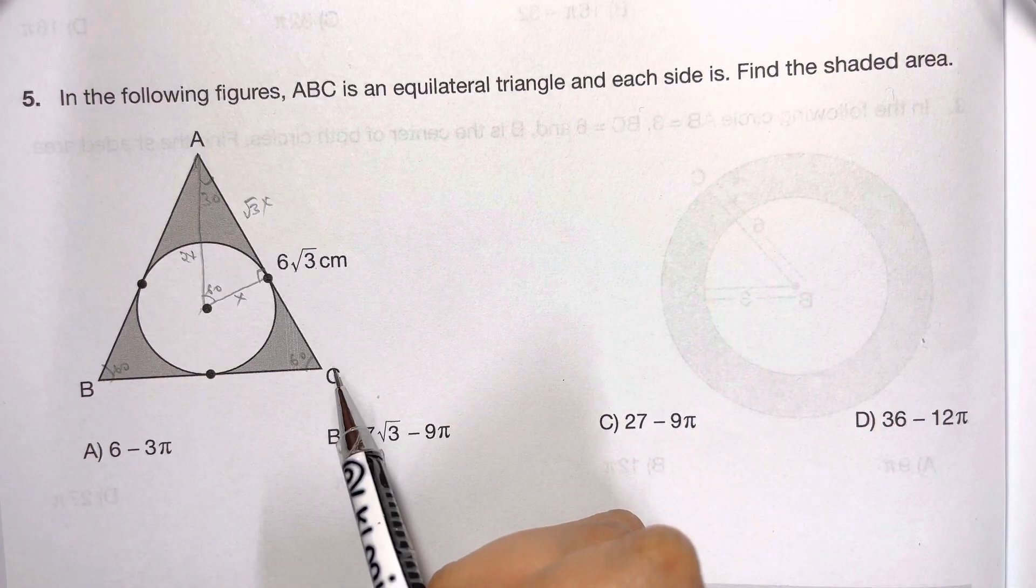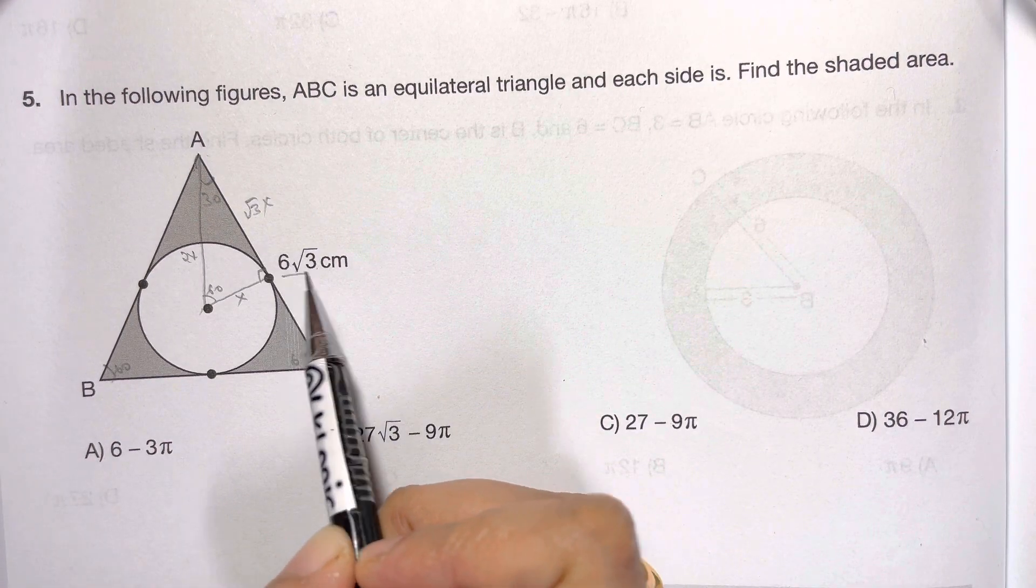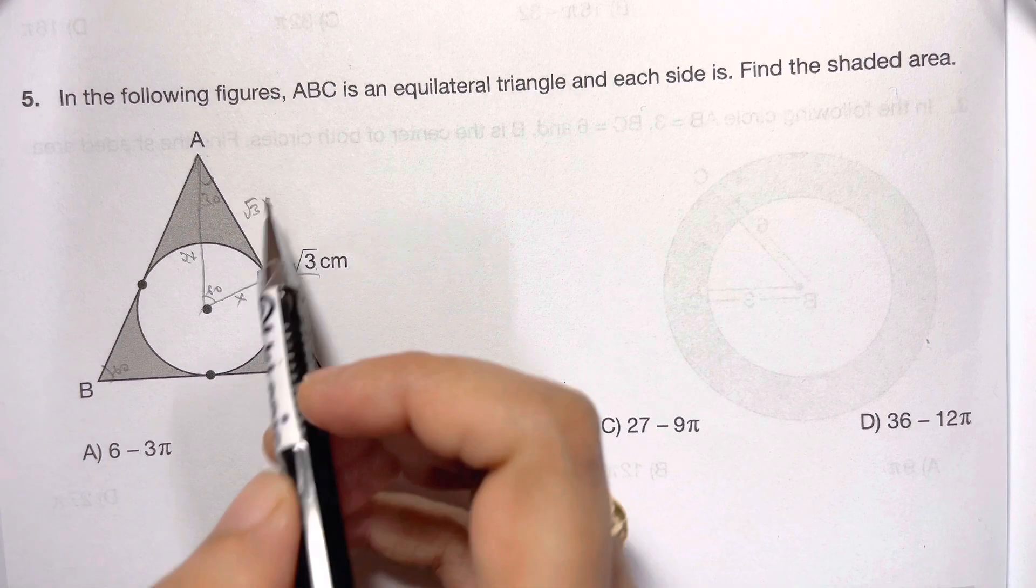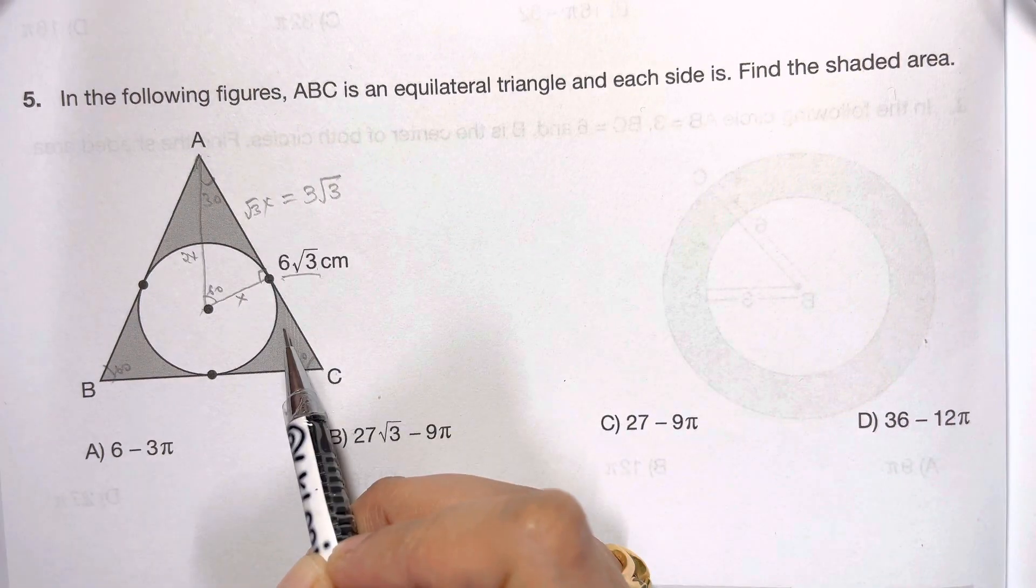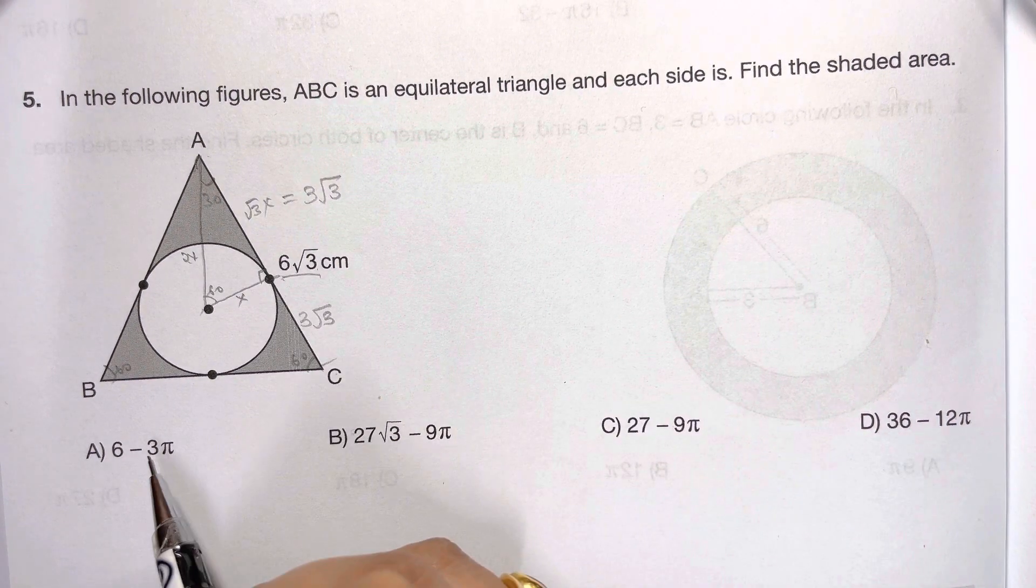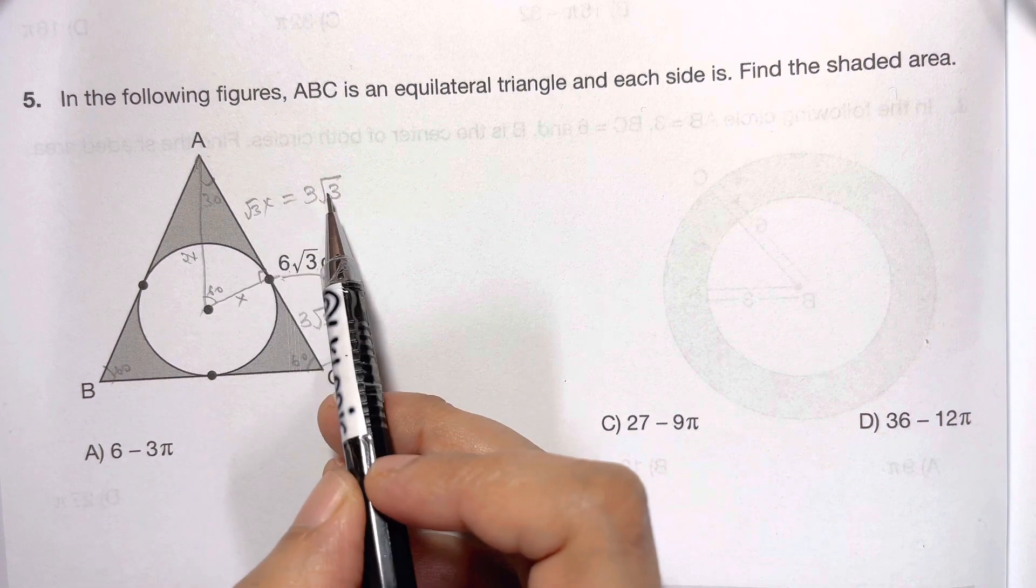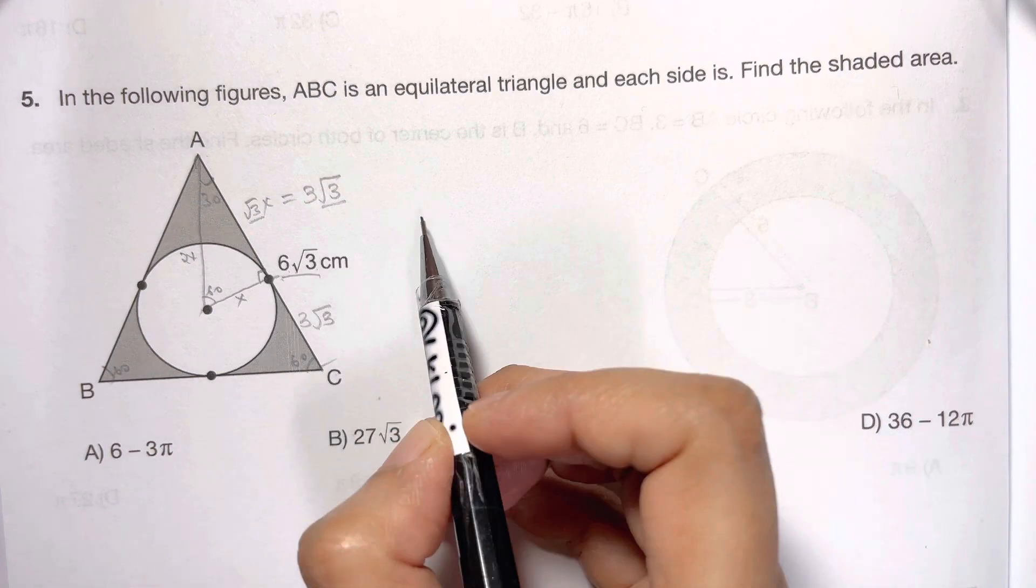As you can see, this whole thing is 6√3. From here to here is 6√3. Half of 6√3 is 3√3. So √3x is equal to 3√3. This part from here to here is 3√3, so when you add up you get 6√3.